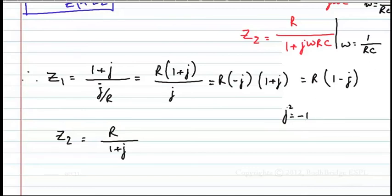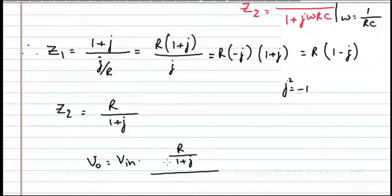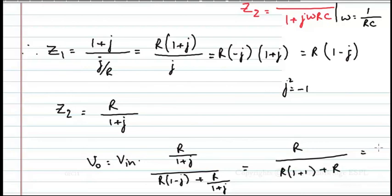That is what I use here: 1 by j equal to minus 1. So V_output is what? V_input into Z2 by Z1 plus Z2. 1 plus j by Z1 plus Z2 is R into 1 minus j plus R by 1 plus j. So this is equal to R by R into 1 minus j into 1 plus j, which is 1 plus 1. A squared minus B squared, plus R is equal to 1 by 3.